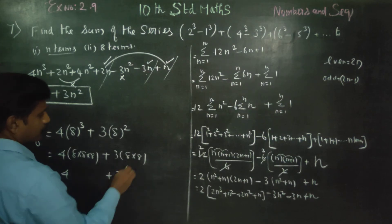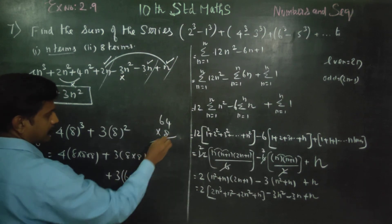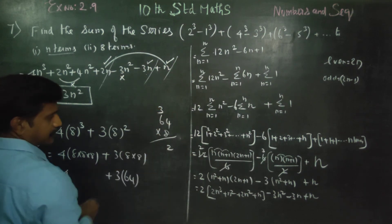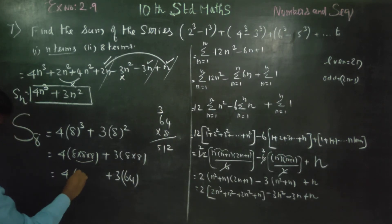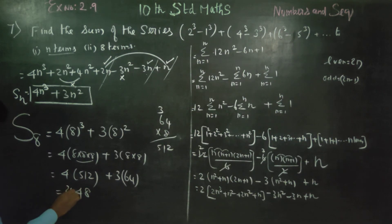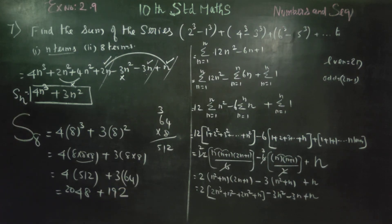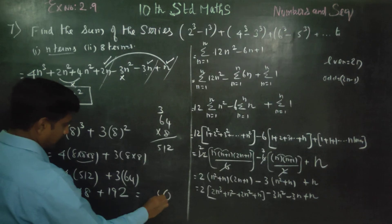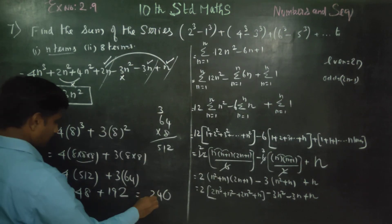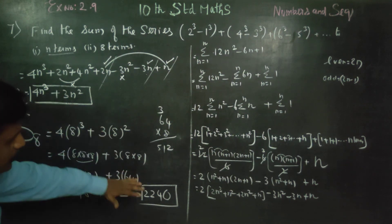So S8 equals 4 into 8 into 8 into 8 plus 3 into 8 into 8. Now 8 cubed: 8 fours are 32, carry 3; six eights are 48, plus 3 is 51 — so 512. Then 4 into 512: 2s are 8, 1s are 4, 5s are 20, giving 2048. Plus 3 into 64 equals 192. Adding: 2048 plus 192 equals 2240. So S8 equals 2240.